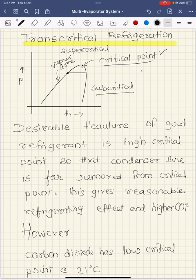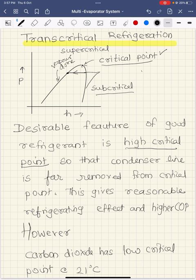A high critical point is a desirable feature. If you have a high critical point, when you are designing a condenser — suppose the condensation line is here — the condensation line is far separated from the critical point, and because of that the refrigerating effect you get is good enough. The cycle I am drawing here is the subcritical cycle. It is called a subcritical cycle because the refrigerant is condensing below the critical point — the entire vapor compression refrigeration cycle is operating in the region below the critical point.